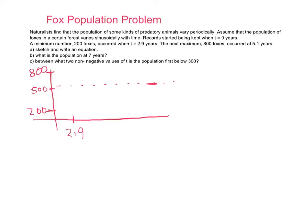We know that 2.9 is an important number because that's when we first have a minimum. And we know that 5.1 is an important number because that's when we first have a maximum. And so from here to here is 2.2. And so from here to the next point is 2.2, which brings us to 7.3, which is where we have a minimum again. And so the graph looks something like this.